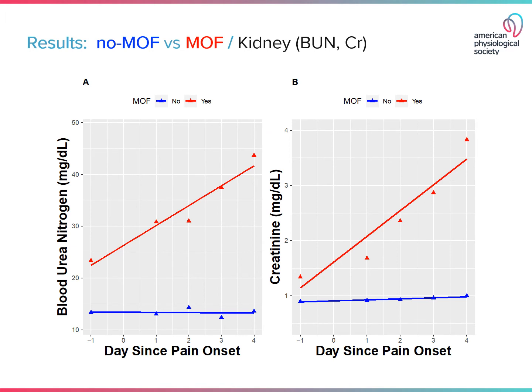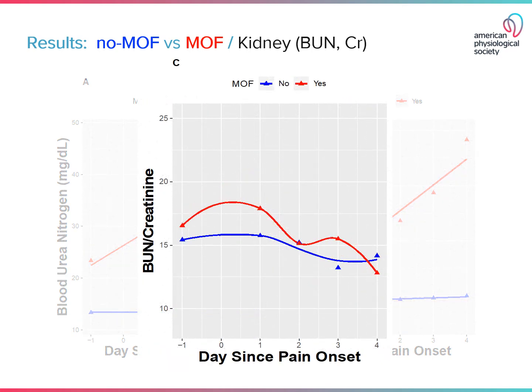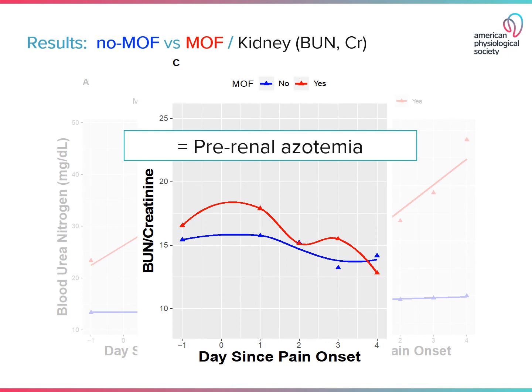Results. The first thing we looked at was the kidney. On the left is the blood urea nitrogen, and on the right is the creatinine, measured daily since the onset of pain. In multi-organ failure, both the BUN and the creatinine rise during the hospitalization. Notably, the ratio between BUN and creatinine in multi-organ failure stayed relatively constant, meaning the kidney failure was from pre-renal azotemia, suggesting low perfusion of the kidney due to hypovolemia.